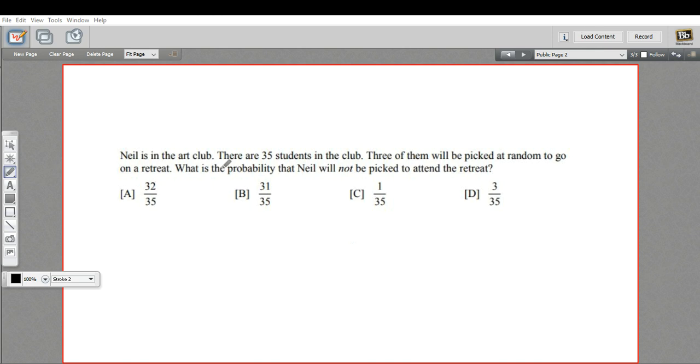This one says Neil is in the art club. There are 35 students in the club. Three of them will be picked at random to go on a retreat. If we were going to figure out the probability of being picked to go on a retreat, there's three chances out of 35. That's the event of being picked, but we want